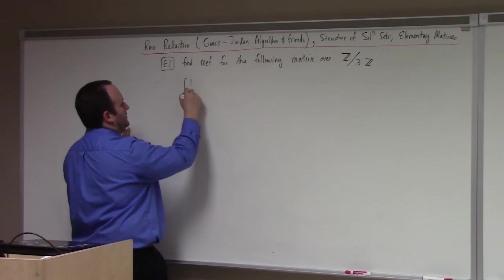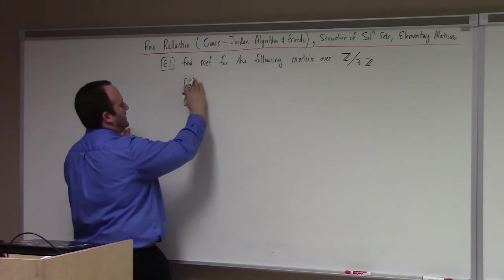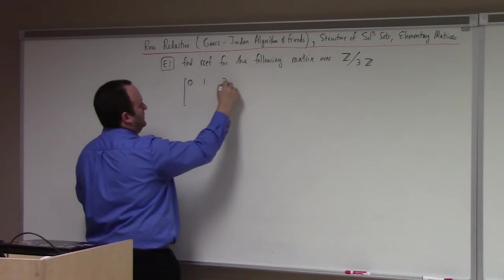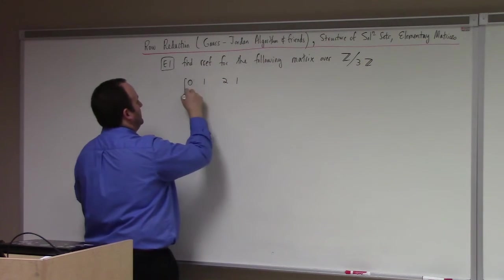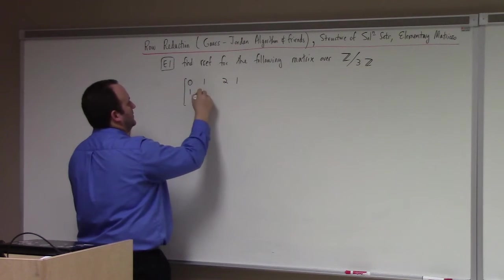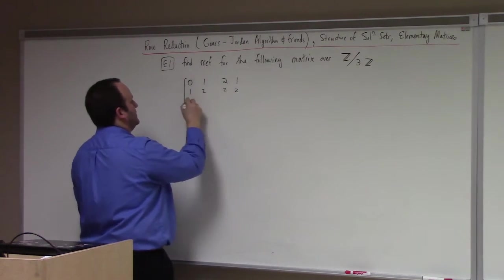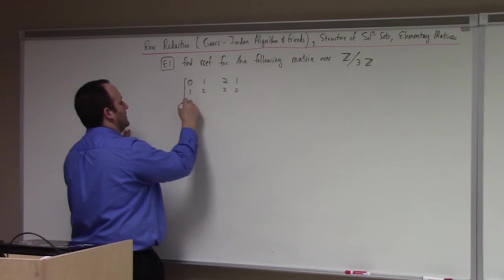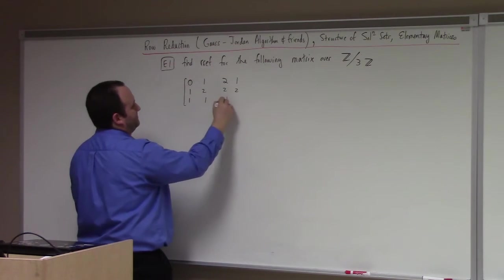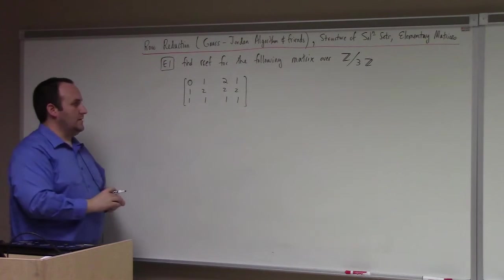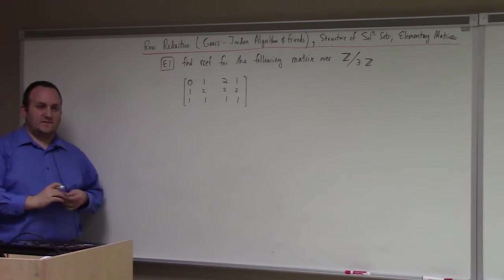So here's the matrix I'll look at. Let me start out with zero, one, two, one. One, two, two, two. Two, ones. Okay, that should suffice.